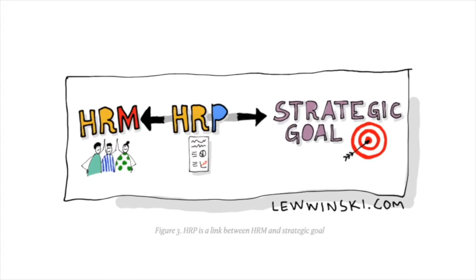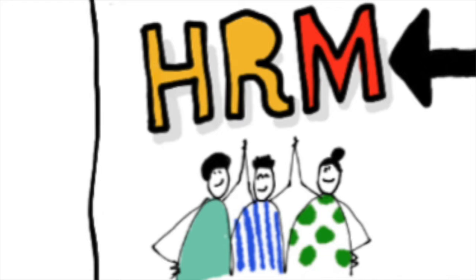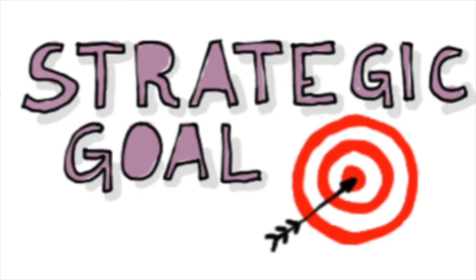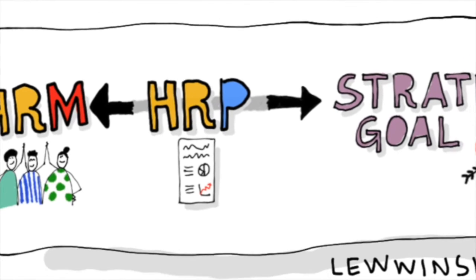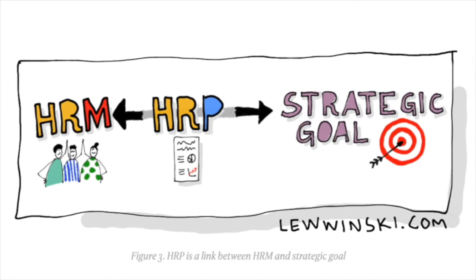Human resource planning acts as a link between human resource management and the strategic goals of an organization. If a company wants to achieve something, it needs to manage its workforce. We need human resource planning to make sure the goal is achieved with the help of HR. So HRP acts as a link between human resource management and the strategic goals of an organization.